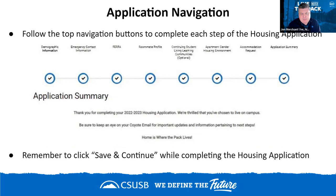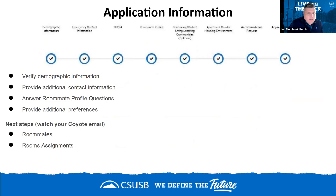Roommate and room assignments will all be sent to your MyCoyote email, so make sure you're checking it regularly. If you get an assignment, you need to respond within the window we provide — otherwise we'll move to the next person. If you really want to live on campus, make sure you lock in with your housing license agreement and the assignment we provide.